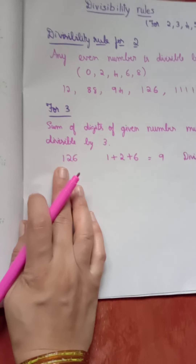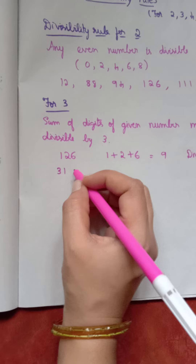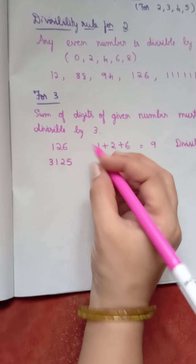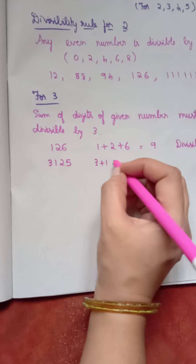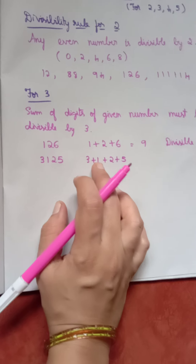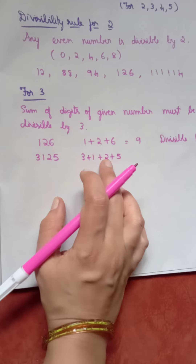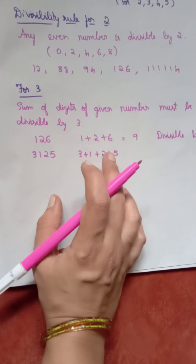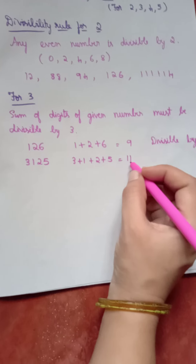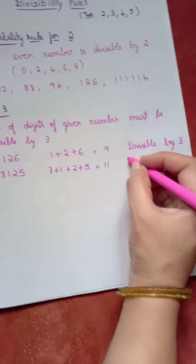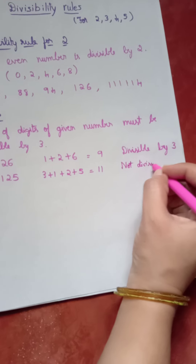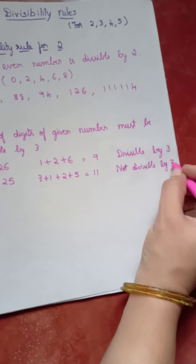Next, let us take one more number: 3125. Add the digits — 3 plus 1 plus 2 plus 5. 3 plus 1 is 4, 4 plus 2 is 6, 6 plus 5 is 11. Since 11 is not divisible by 3, so 3125 is not divisible by 3.